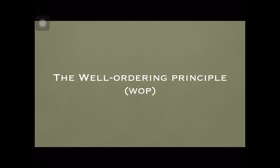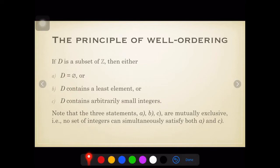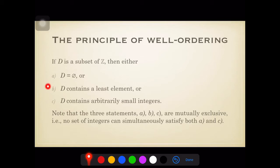Let's check the well-ordering principle. It states that if D is a subset of the set of integers, then either the set D is empty, or set D contains a least element, or set D contains arbitrarily small integers. Note that these three statements are mutually exclusive — no set of integers can simultaneously satisfy both, say for example, A and C.